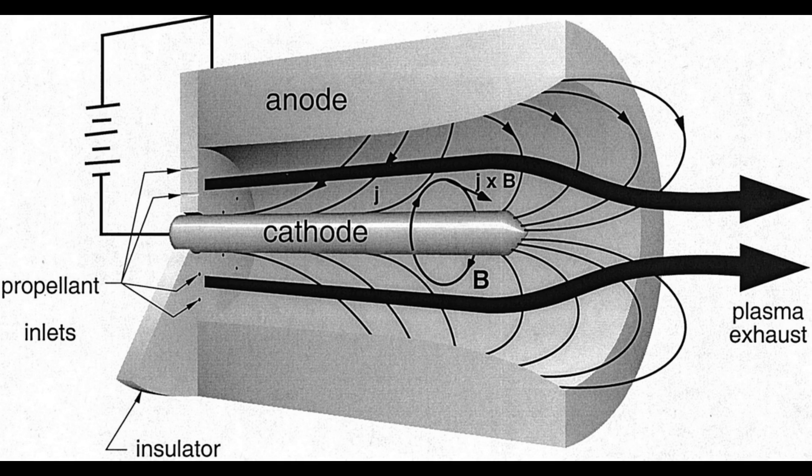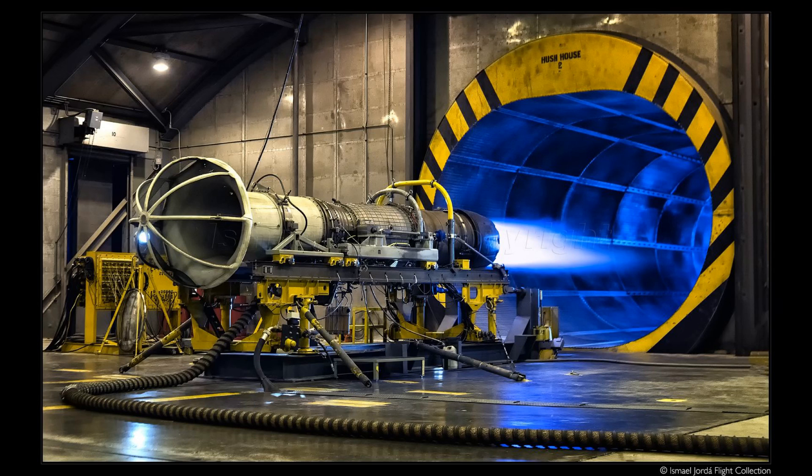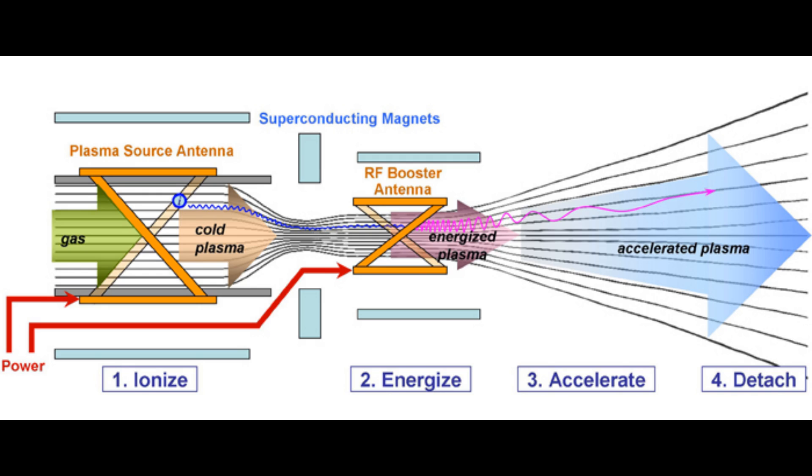Even in space you have ion thrusters, they actually expel ions. So there's always been some sort of propellant. Everything we know about thrust so far is that you have to expel something. Force equals MA, and every reaction requires an opposite reaction, so you have to shoot something out the back.